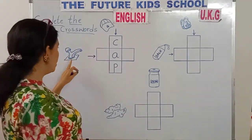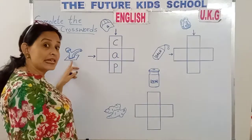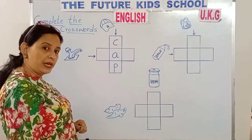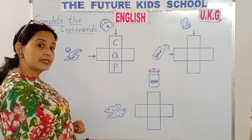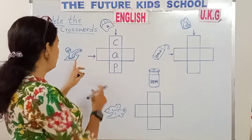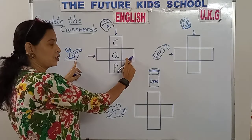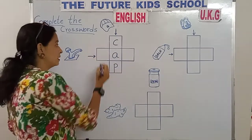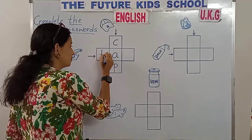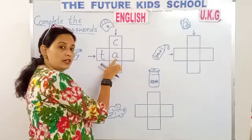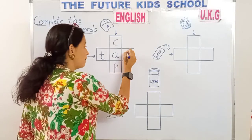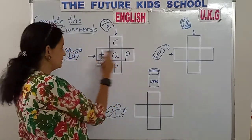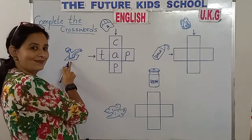And what is this? It's a tap. T-A-P spells tap. We'll write this from this side, children. Look at the arrow. From this side, let's write the word tap. T, we've got A over here. And P. T-A-P. Tap.